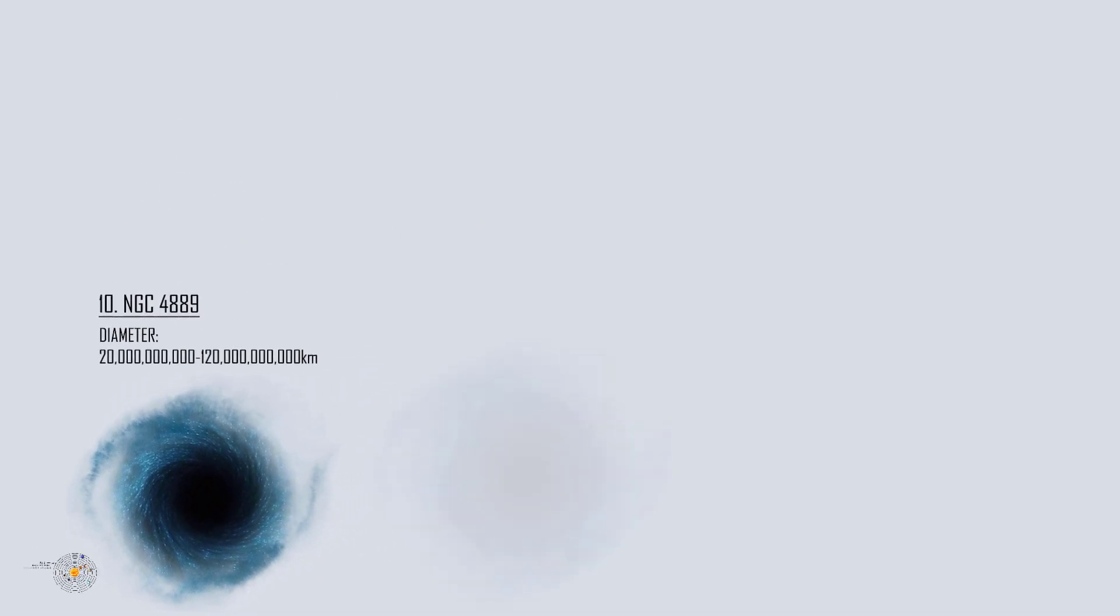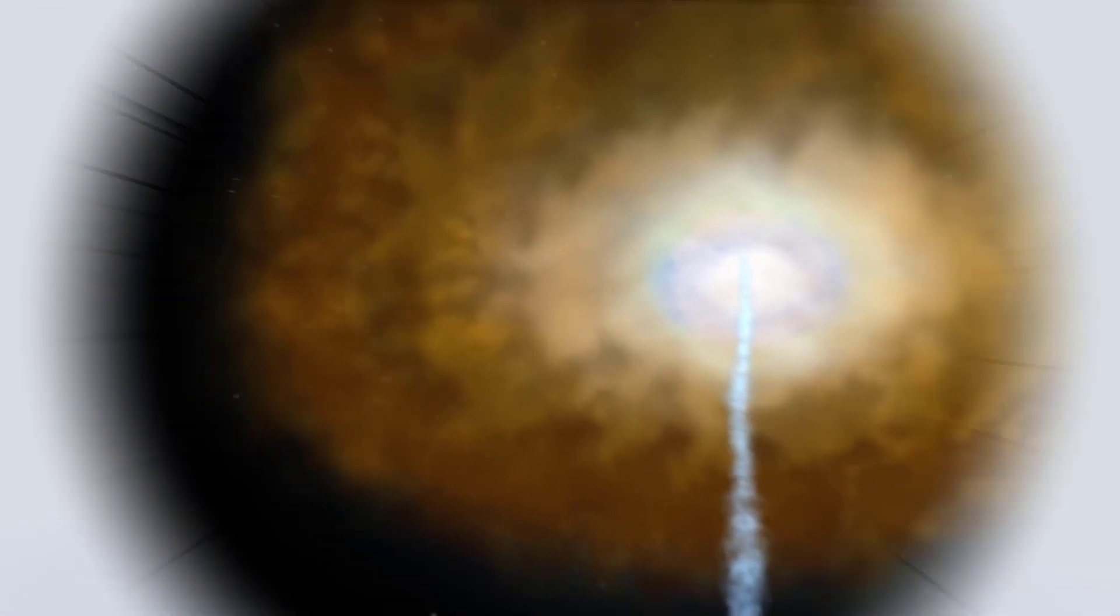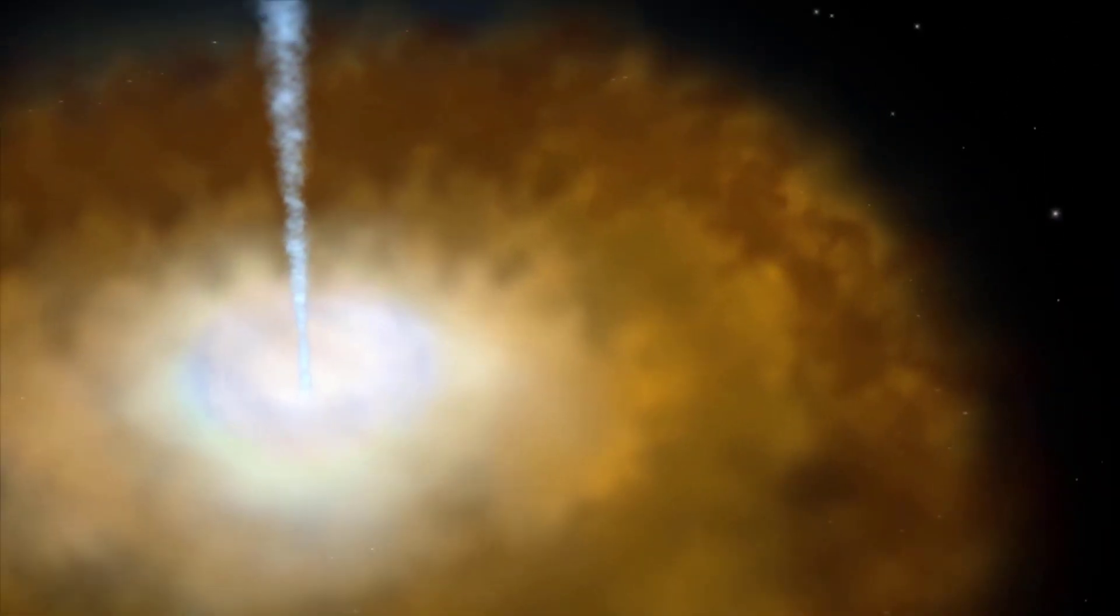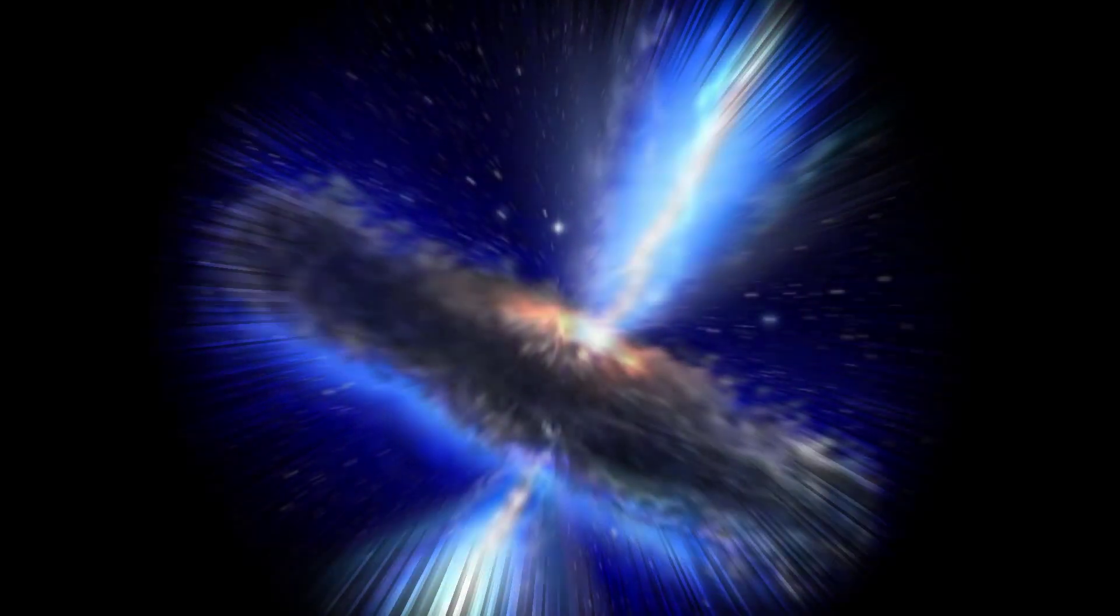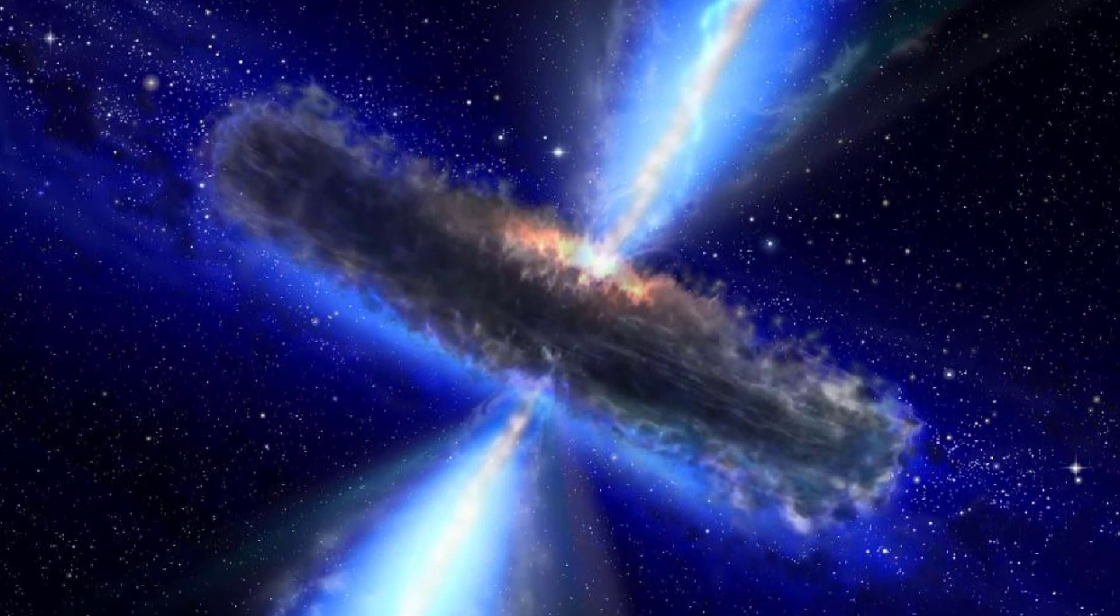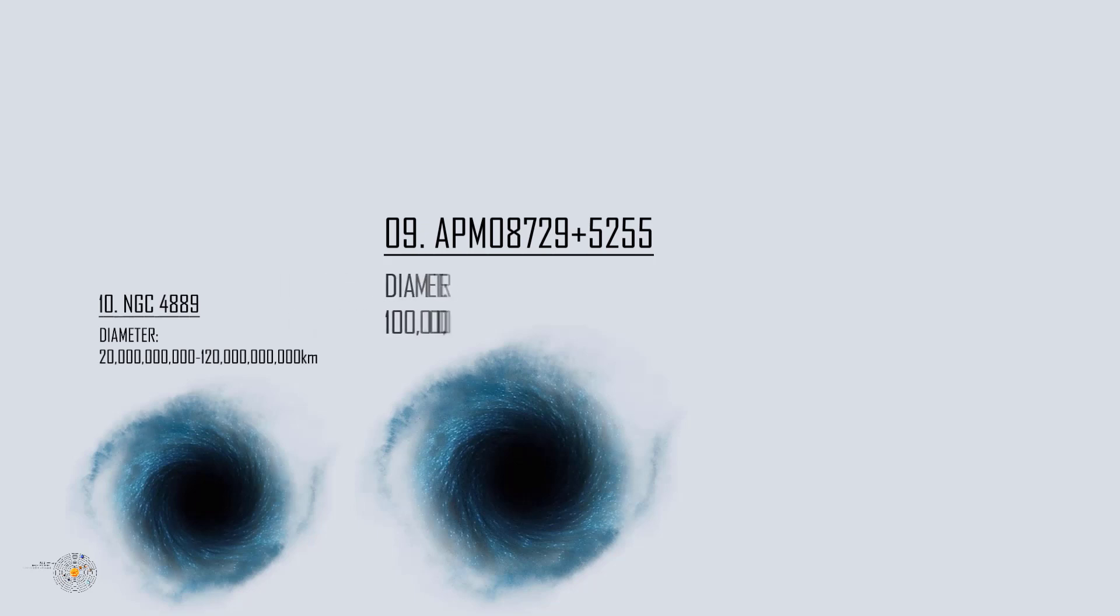Number 9: APM 08279+5255. This cosmic object is very distant, a broad absorption line quasar located in the constellation Lynx. The AGN is a radio quiet quasar with no evidence of a relativistic jet. It is powered by one of the largest known supermassive black holes with estimates putting it around 20 to 23 billion solar masses and a diameter of 10 to 12 times Pluto's orbit around the sun.